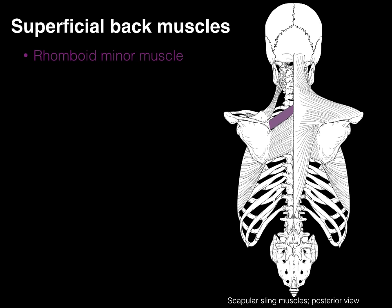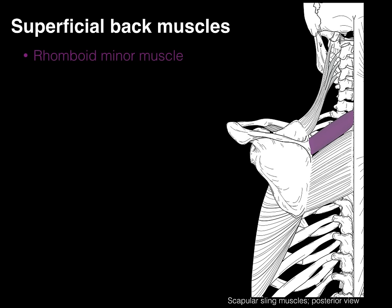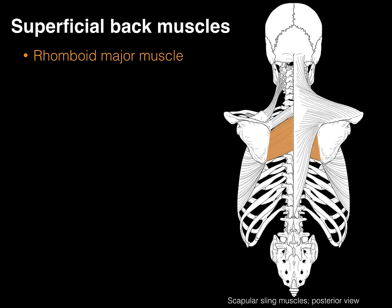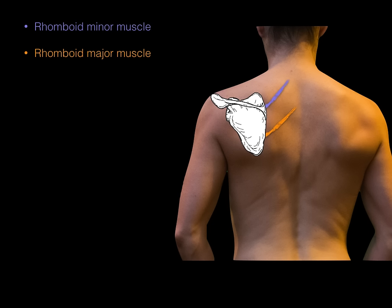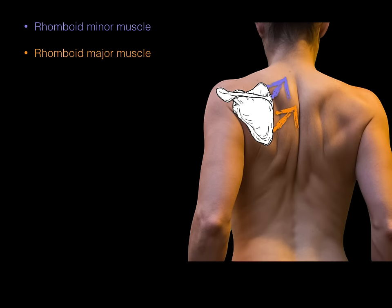The rhomboid minor makes a rhombus shape and is smaller. It arises from the spinous processes of C7 and T1, and inserts on the medial margin of the scapula at the level of the spine. The rhomboid major has the same rhombus shape but is bigger — it arises from the spinous processes of T2 down to T5 and inserts all along the medial margin of the scapula. Collectively, when the rhomboid minor and major muscles contract, they draw the scapula towards the midline — adduction of the scapula.